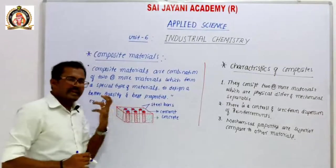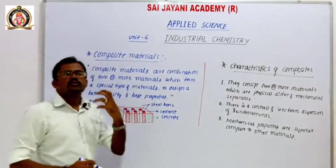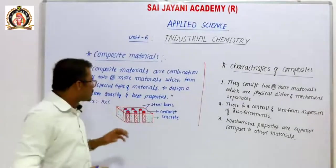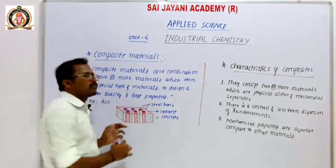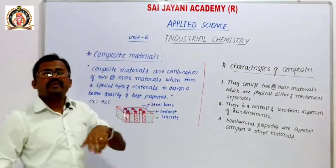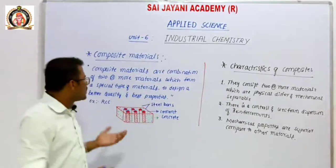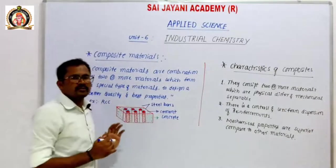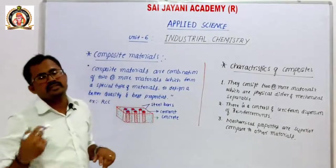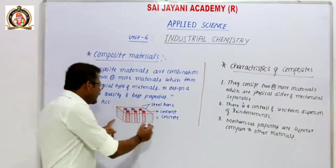There is an advantage to this. If you use cement alone, it is a heavy weight material with a certain material cost. Steel has heavy strength but also a high material cost. Using both together balances weight, strength, and cost.